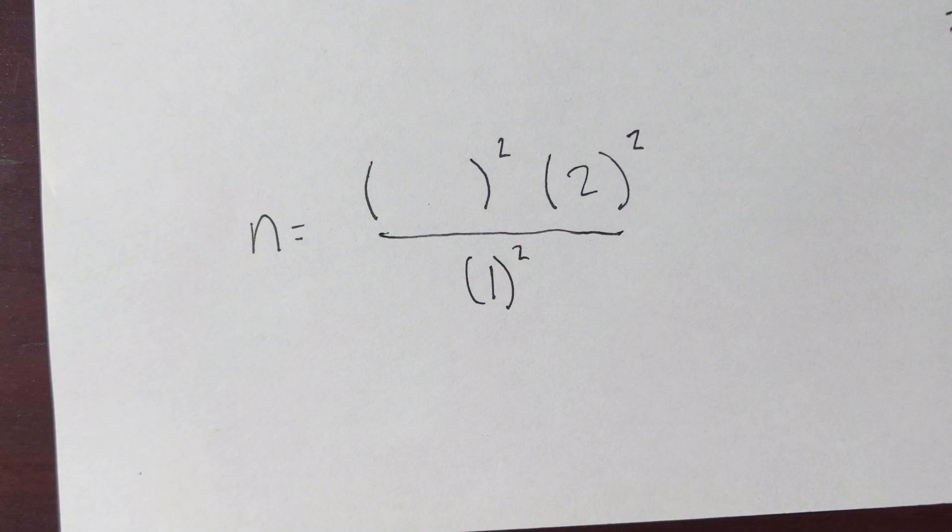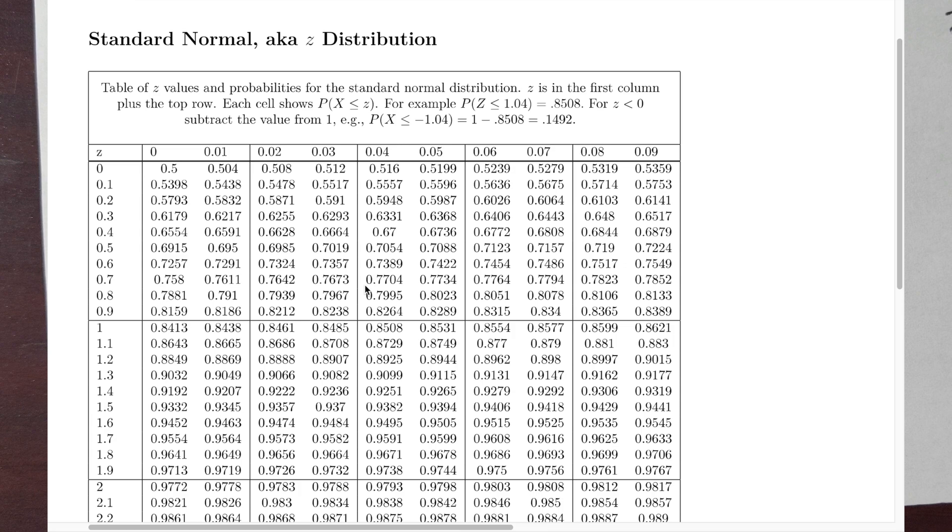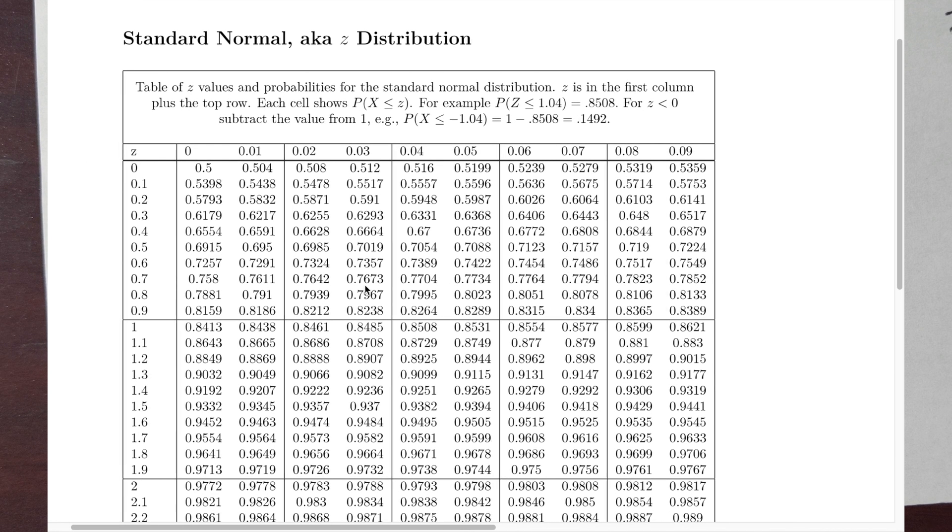So if we have an 80% confidence level, let's look at what that would be in the table. Okay, so we're back in the table. If we have an 80% confidence level, then that means the alpha value is 0.2. So the alpha over two value would be 0.1.